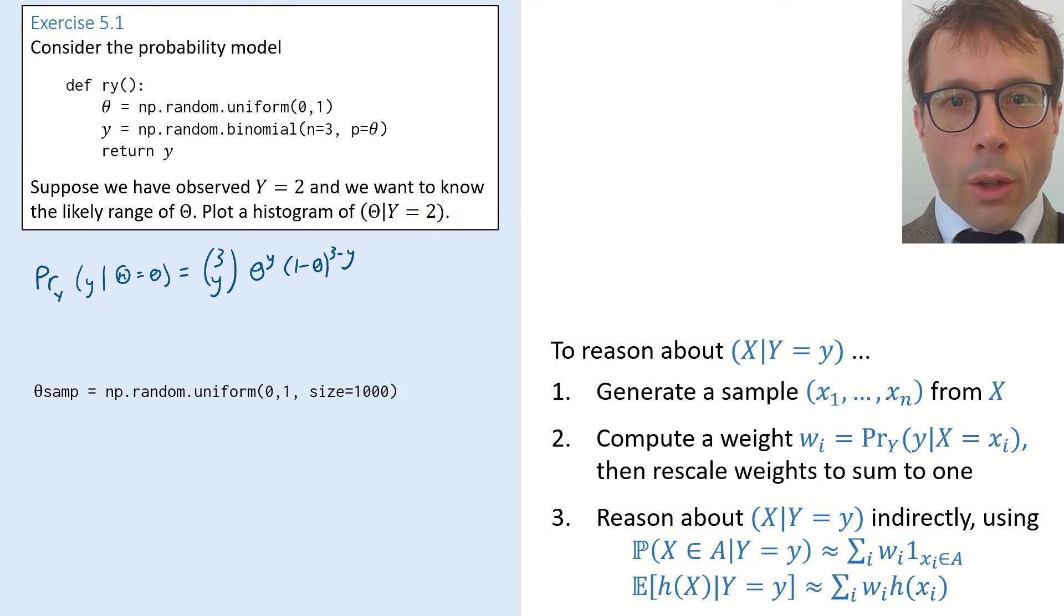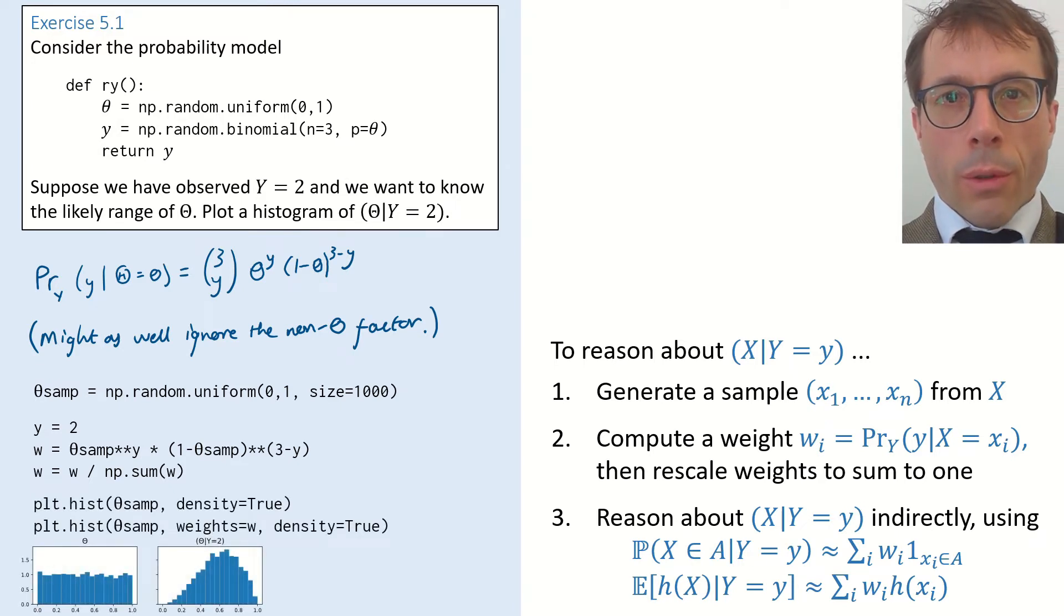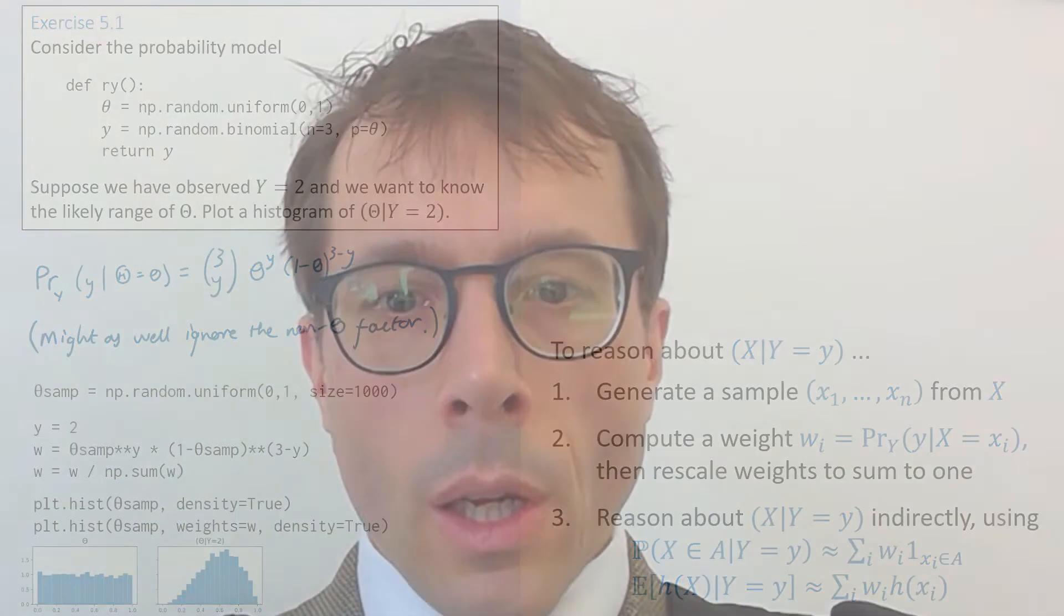Step two, compute the weights based on the conditional likelihood of y. The question tells us how y was generated. It says y is a binomial with parameters 3 and theta, so this formula here is its likelihood. Now, just evaluate the likelihood at each of the sampled theta values. We might as well ignore the 3 choose y factor at the front because it doesn't depend on theta, so it will cancel out when we rescale the weights to sum up to 1. Step three, whatever we want to report about the conditional distribution of theta, report it via this weighted sample. Here, I'm plotting a density histogram to show the conditional distribution of theta, and I'm also showing an unweighted histogram to show me the original distribution, which was uniform. Okay, well, that's all there is to computational Bayes.